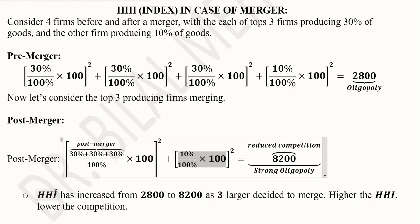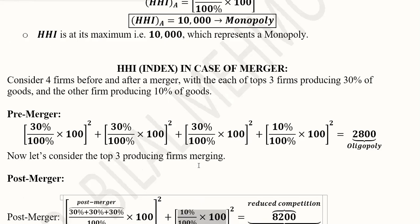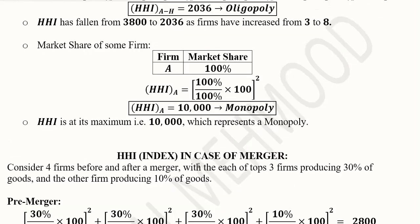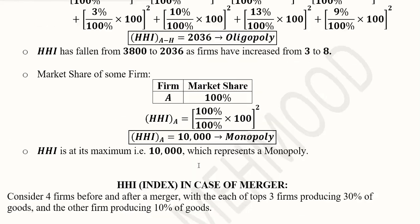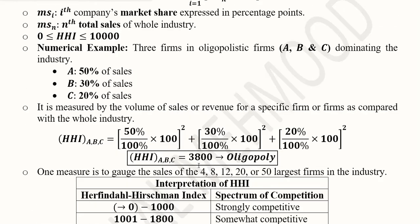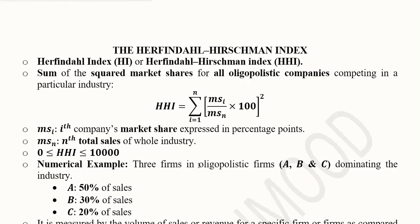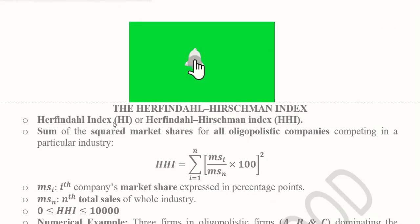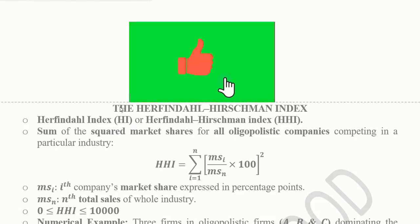So the Herfindahl-Hirschman Index is a simple quantitative tool that helps us assess market structure — including the impact of mergers — and make decisions on the basis of this index. I hope you've benefited from this video. Thank you.